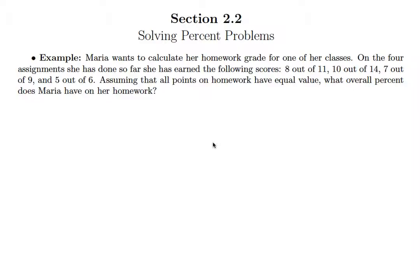So Maria wants to calculate her homework grade for one of her classes. On the four assignments she has done so far she has earned the following scores: 8 out of 11, 10 out of 14, 7 of 9, and 5 out of 6. Assuming that all points on homework have equal value, what overall percent does Maria have on her homework?